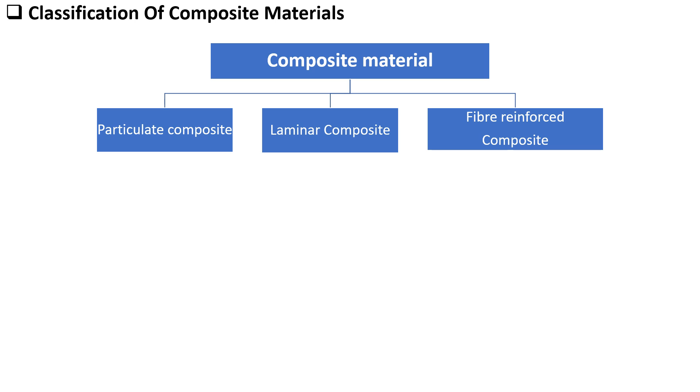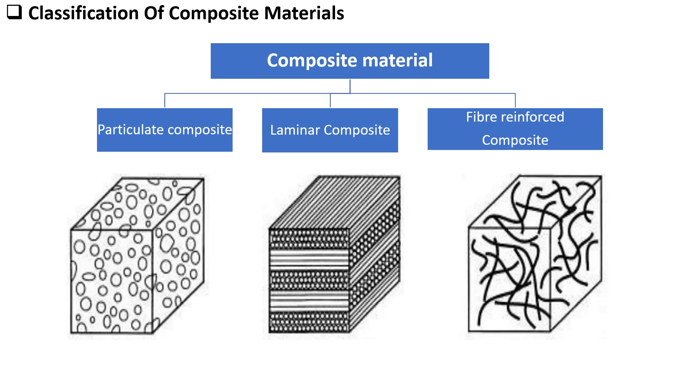Particulate composites are made by mixing small particles or fillers into a matrix which may consist of polymers, metals or ceramics. These fillers serve to enhance properties such as strength, toughness and thermal resistance. Particulate composites can be used in construction and automotive sectors. The size and distribution pattern of particles can be done precisely to achieve specific mechanical and physical characteristics.